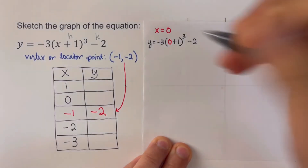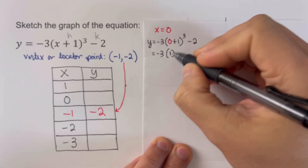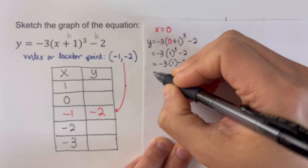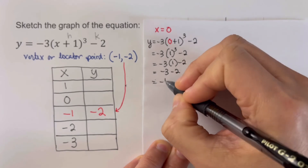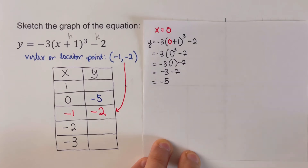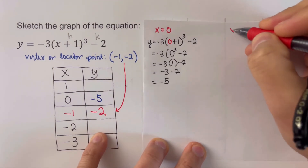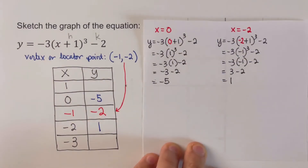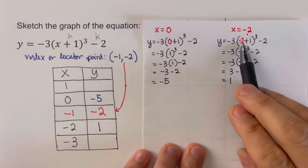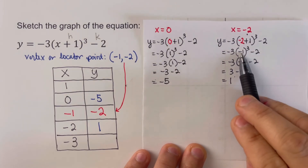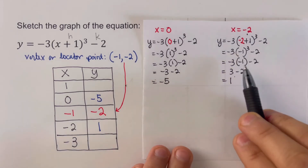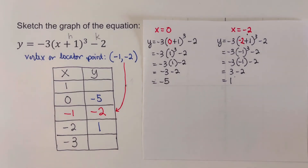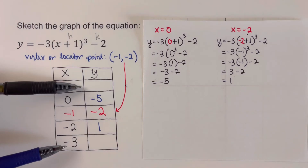When x equals negative 2: negative 2 plus 1 is negative 1, negative 1 cubed is negative 1, and negative 1 times negative 3 is positive 3, minus 2 equals positive 1. So y equals 1 when x is negative 2.